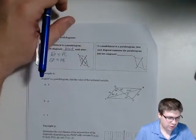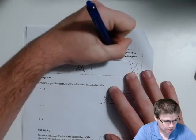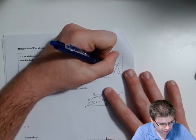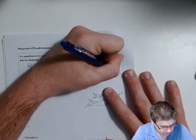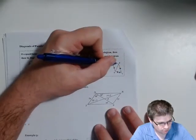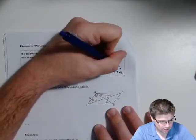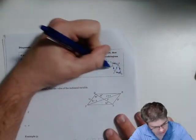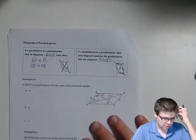If a quadrilateral is a parallelogram, then each diagonal separates the parallelogram into two congruent triangles. If we know opposite sides are parallel and congruent, and they have that third shared side, we can say by side-side-side they're congruent. We can also bring angles into play — we know this angle is congruent to that angle, giving us side-angle-side.